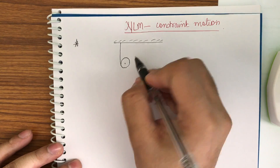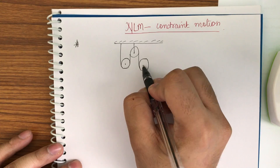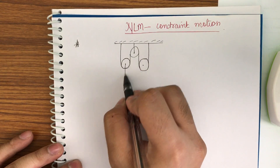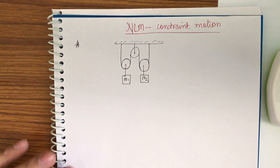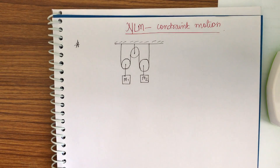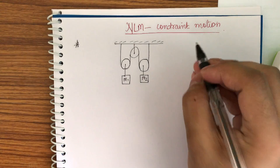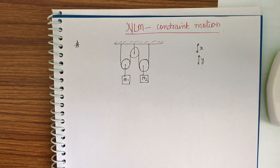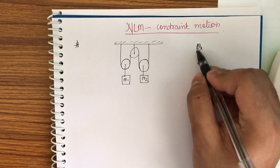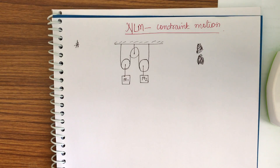The constraint relation involves the type of questions which have multiple pulleys in them. For example, I am taking this one, where mass M1 is attached here and M2 is attached here. The constraint relation is applied when the pulleys are actually moving. Teachers used to take some X, some Y in length and then differentiate them, but I found that method a bit confusing. So I had once asked my senior about this, and he told me a method I want to share here.